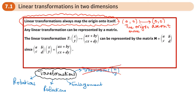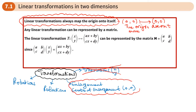With an enlargement, as long as the centre of enlargement is the origin — as long as the centre of enlargement is (0, 0) — this is a linear transformation, because the origin won't move. How about a reflection? As long as we have a reflection in a line that goes through the origin, this will be a linear transformation, because the origin won't move.